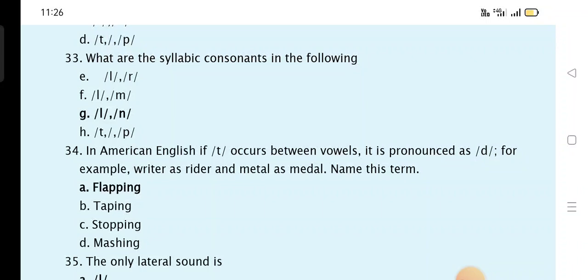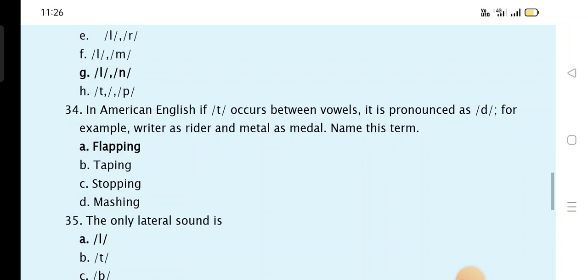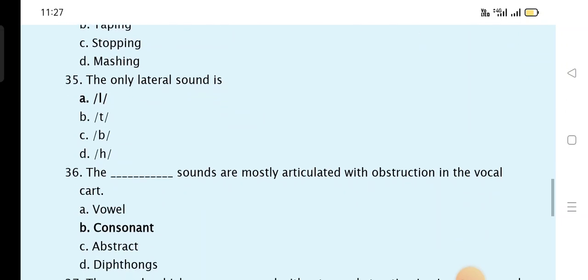In American English, if T occurs between vowels, it is pronounced as D. For example, water, writer as rider, and metal as medal. Name this term: flapping. The only lateral sound is L.